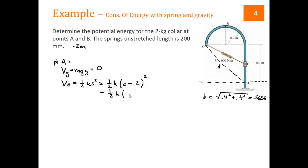If we plug in D over here, we get 0.5656 minus 0.2 gives us 0.365, 0.365 squared. So our elastic potential energy for A is 40. And our gravitational is 0, so our total VA is 40.